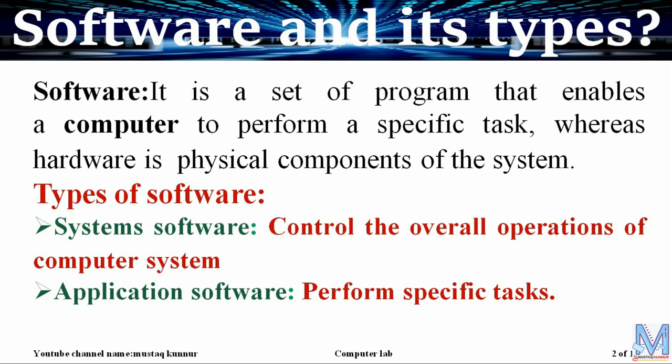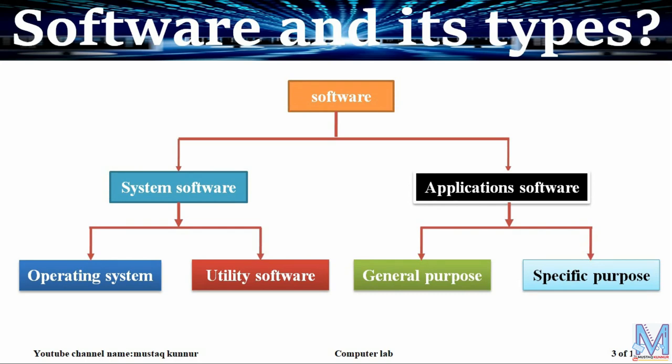Software is broadly classified into two categories: system software and application software. System software is used to control the overall operation of the computer system, whereas application software is used to perform a specific task.